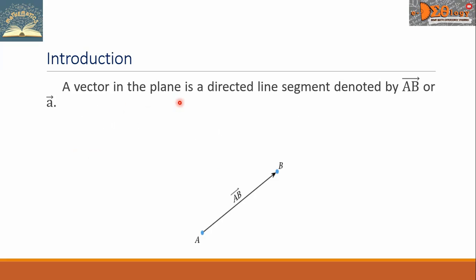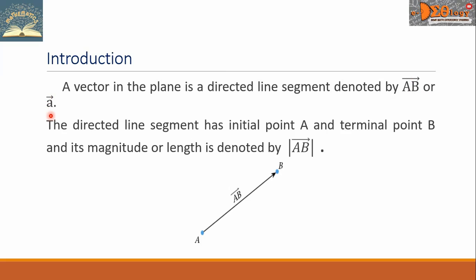A vector in the plane is a directed line segment denoted by vector AB — two letters or points put together with an arrow on top — or vector A. The directed line segment has initial point A and terminal point B, and its magnitude or length is denoted by this symbol, which we read as the length of vector AB.